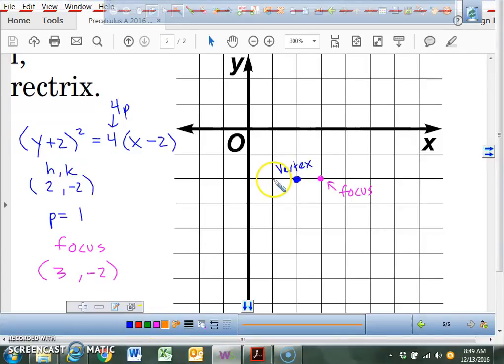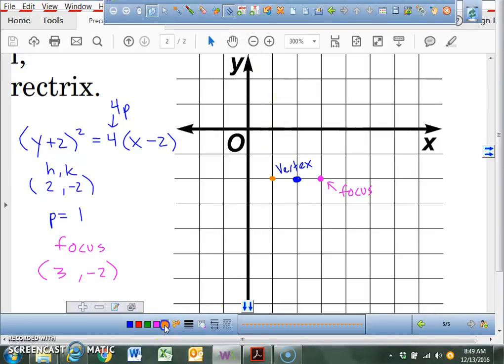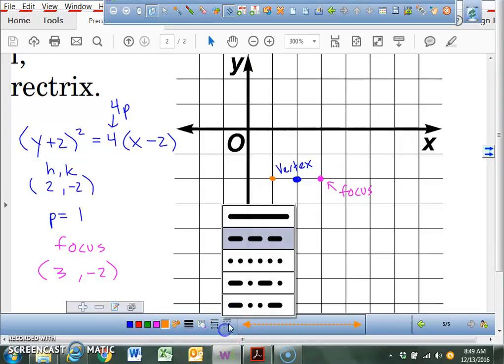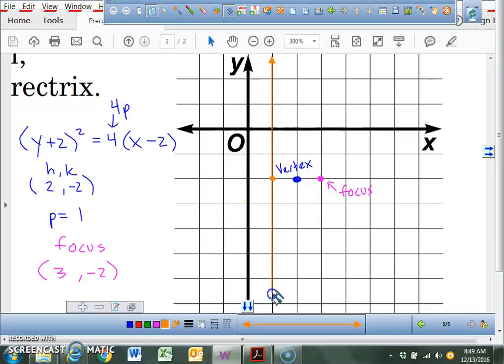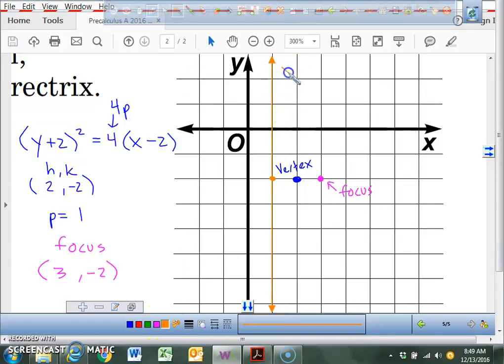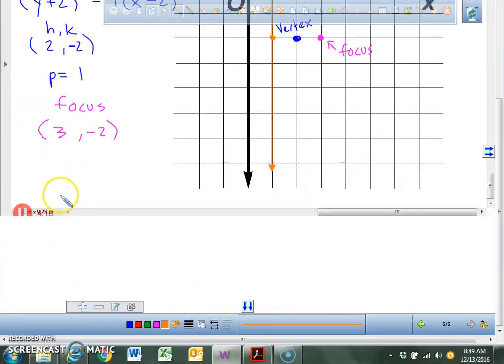Now, if I go over here, and put a point one unit away on the other side, and I draw a vertical line going straight down through that point. And I say, this is at x equals 1. What do we call the line x equals 1? What do we call that? The directrix.